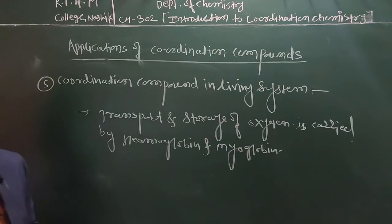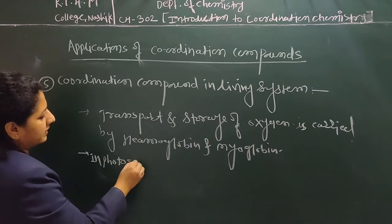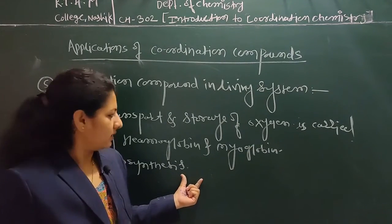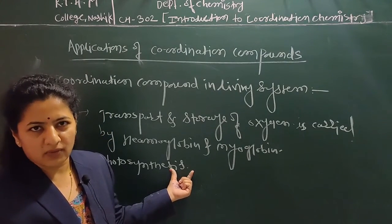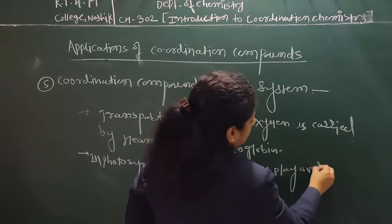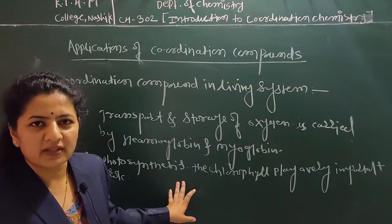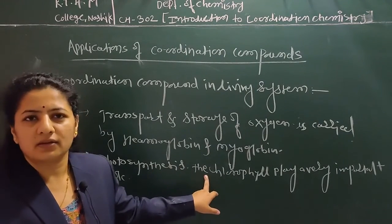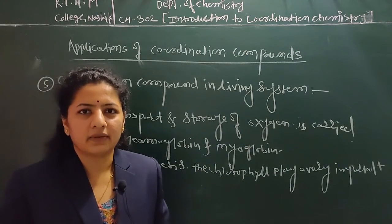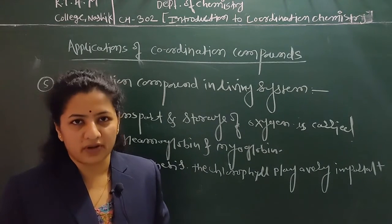Coordination compounds also play an important role in photosynthesis. In chlorophyll, a magnesium ion is present and magnesium plays a very important role in photosynthesis processes. In biological systems, essential metals are needed in large quantities because they play a vital role in normal body functioning.